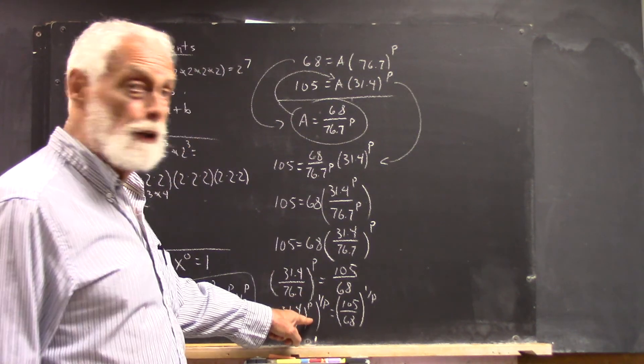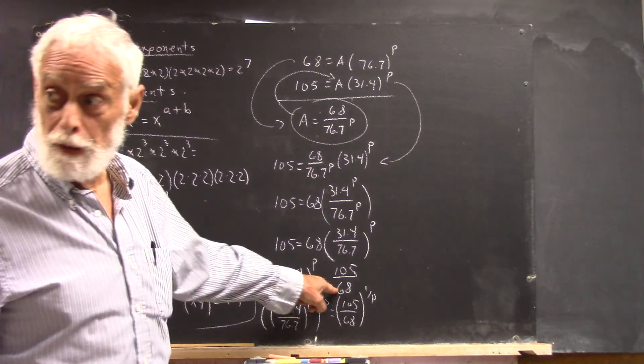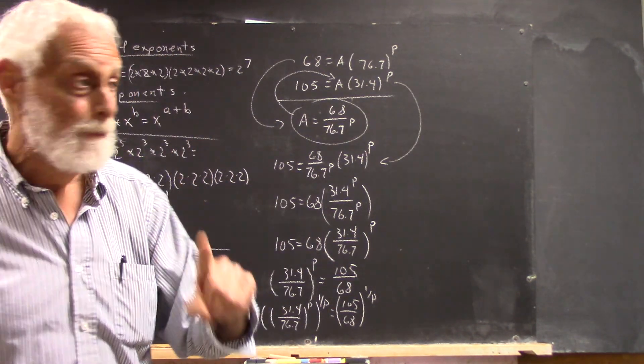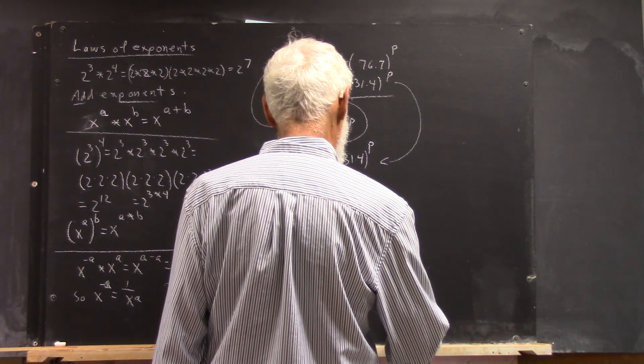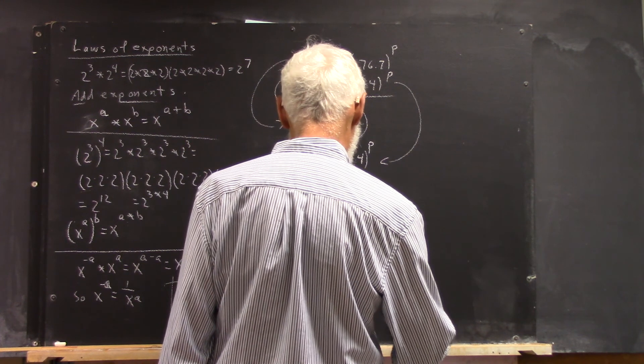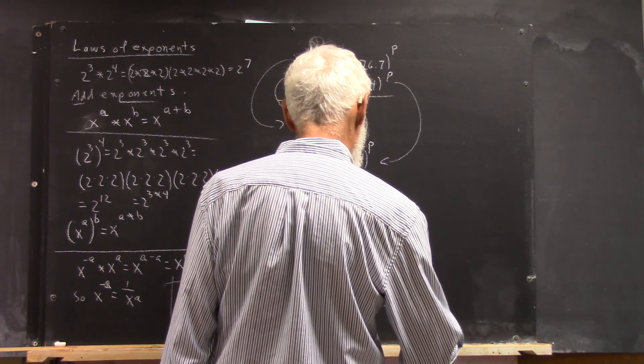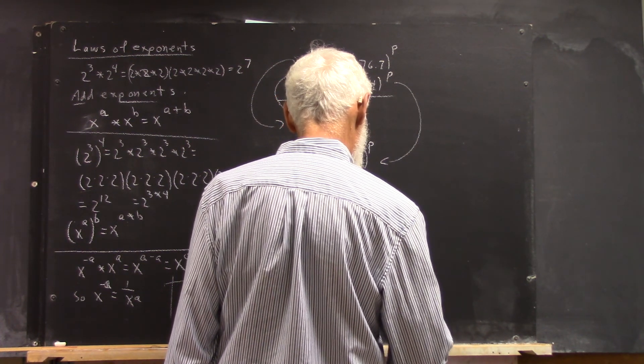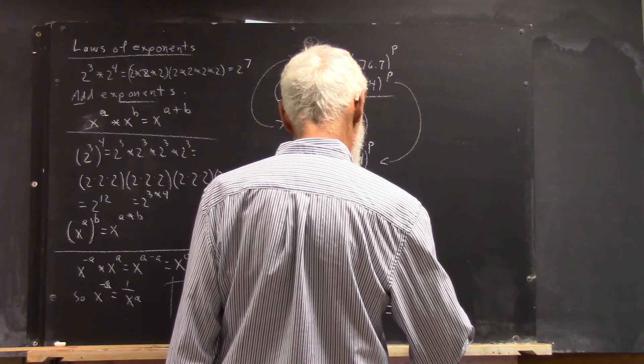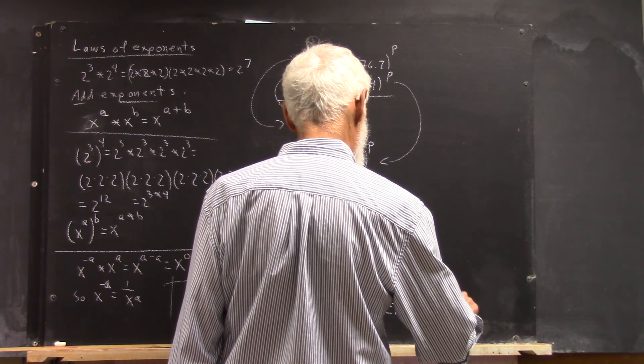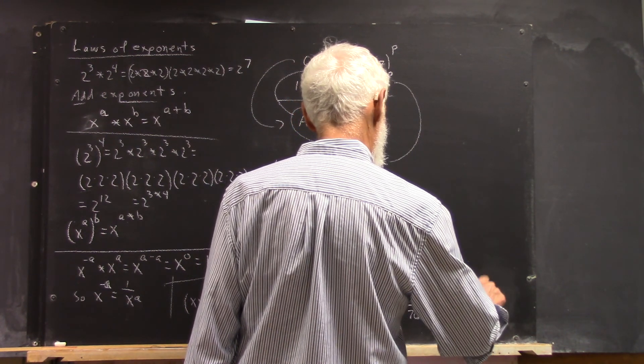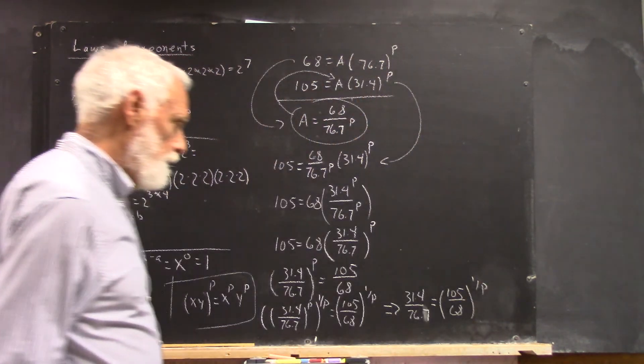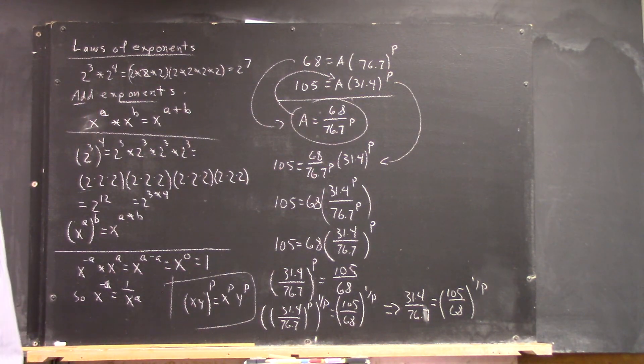Well, the 1 over P power of the P power, you multiply the powers, you get 1, right? So, 31.4 over 76.7 is 105 over 68 raised to the 1 over P, right? Yep.